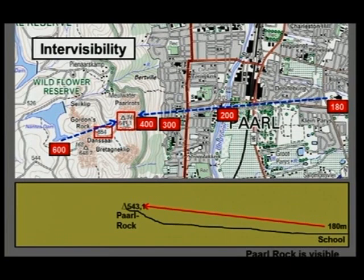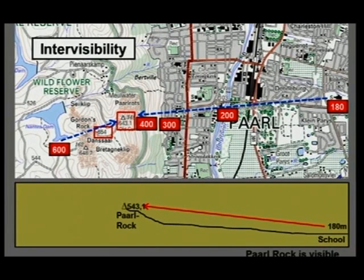Here's a 600-meter contour line, and PAL Rock is 543. But have a look at this — 654. Here we've got Gordon's Rock at a height of 654 meters. In other words, if I've got 600 here at Nantes Dam, here's Gordon's Rock which is much higher — about 54 meters higher. And here we've got PAL Rock. Gordon's Rock will be a blocking feature.